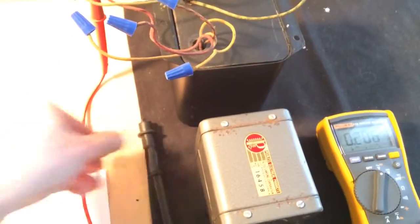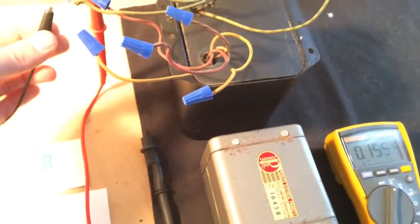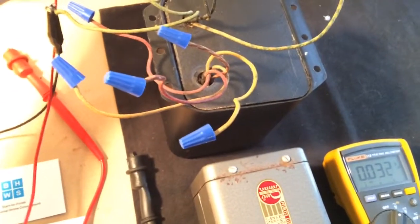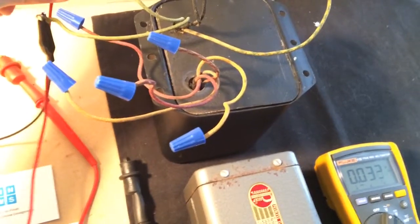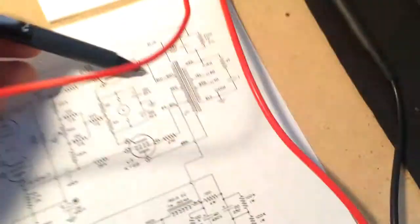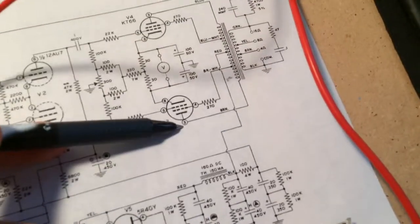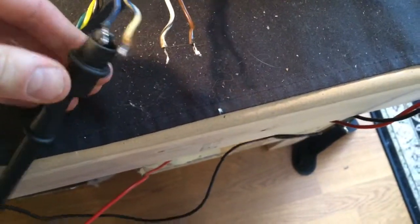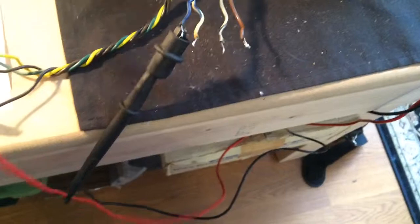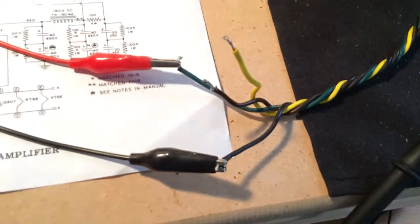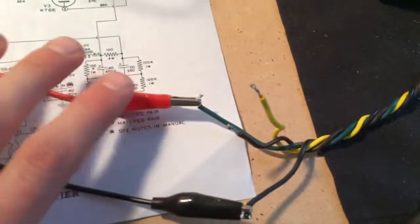I'm just going to get some leads hooked up here. And what I'm going to be measuring across is blue and brown. All right. So I've got one lead hooked up to the primary and the other one on green.